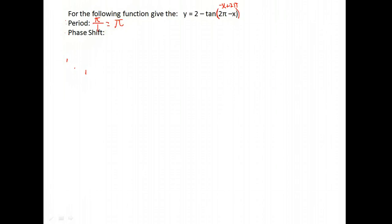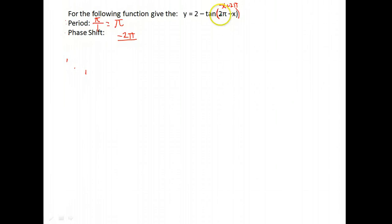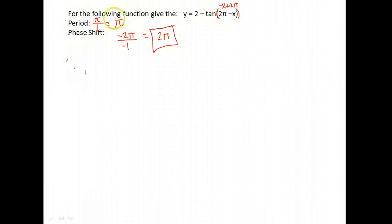To find the phase shift, take the number added or subtracted from x — in this case positive 2π — and write it with the opposite sign, so negative 2π, then divide by the number in front of x, which is negative 1. Negative 2π divided by negative 1 is positive 2π. So this tangent graph has a period of π and a phase shift of 2π to the right.